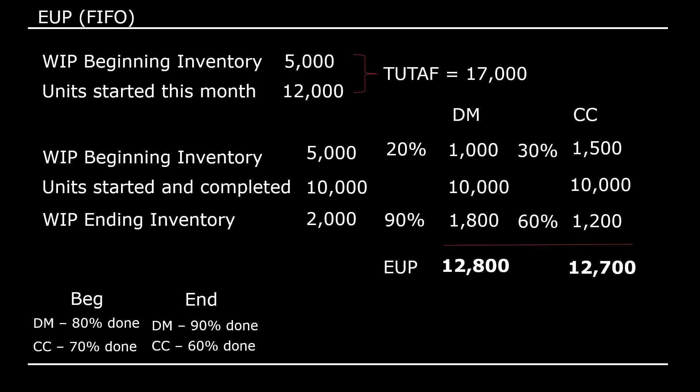These EUP totals are what we divide with the current period cost to get cost per EUP. You might wonder: can we just take the total cost and divide by the 17,000 physical units? The answer is no, because not all units are completed. To address this, we solve for equivalent units of production so we can get a cost per unit despite having incomplete physical units. That's the concept of EUP — how many quasi-units do we have based on the work done this month?